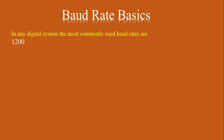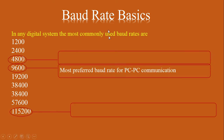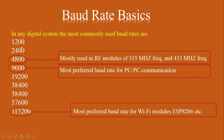Now we come to baud rate basics. In any digital system — whether a computer, microcontroller, microprocessor, or peripheral device — these are the standard baud rates used: 1200, 2400, 4800, 9600, 19200, and up to 115200. Among these, 4800 baud is mostly used for serial communication using RF modules (315 MHz or 433 MHz), 9600 is mostly used for PC-to-PC communication, and 115200 is basically used for Wi-Fi communication.